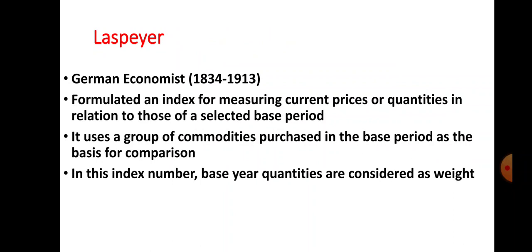Before explaining the construction of Laspeyres price index number, we have to know some important things about Laspeyres. He was a German economist and his period was from 1834 up to 1913. He formulated an index for measuring current prices or quantities in relation to those of a selected base period. It uses a group of commodities purchased in the base period as the basis for comparison. Very important: in this index number, base year quantities are considered as weight.